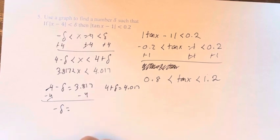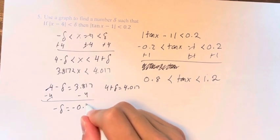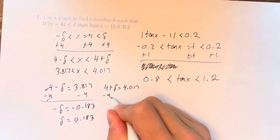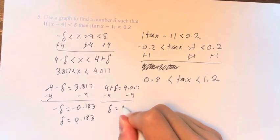Negative delta equals negative 0.183. Therefore delta equals 0.183. And just subtracting 4 here, we get delta equals 0.017.